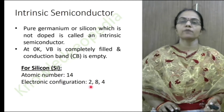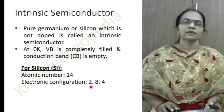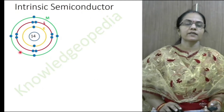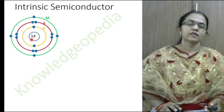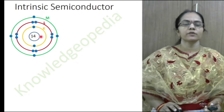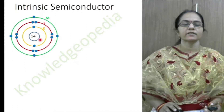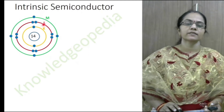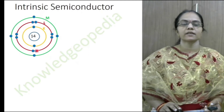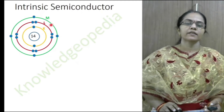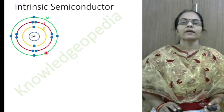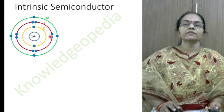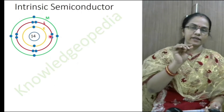We discussed this in our last class — you can refer to it if you haven't seen it. This is the electronic configuration of silicon: 14 protons in the nucleus, 2 electrons in the K shell, 8 electrons in the L shell, and 4 electrons in the outermost M shell. This is the atomic structure of a single silicon atom.